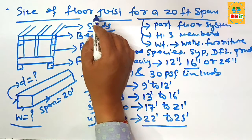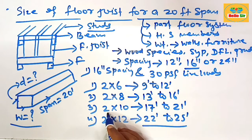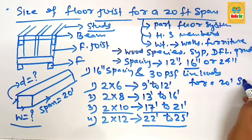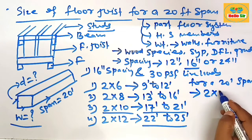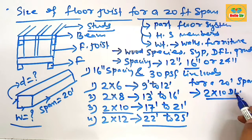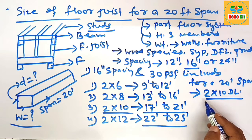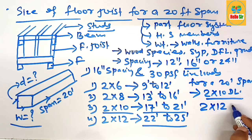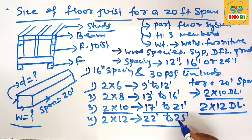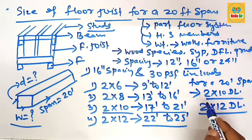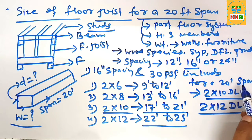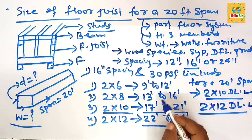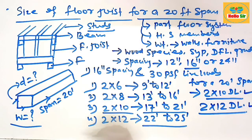For a 20-foot span, you can use 2×10 dimensional lumber, as it falls within the 17 to 21 foot range. However, for the sake of stability, many builders would choose 2×12 dimensional lumber for a 20-foot span. Although 2×10 is technically acceptable, you can use either 2×10 or 2×12 dimensional lumber as a floor joist for a 20-foot span.